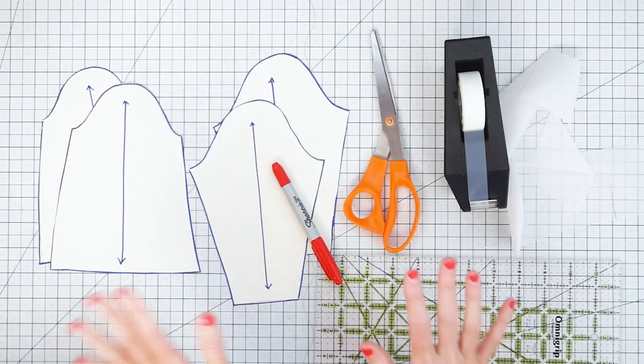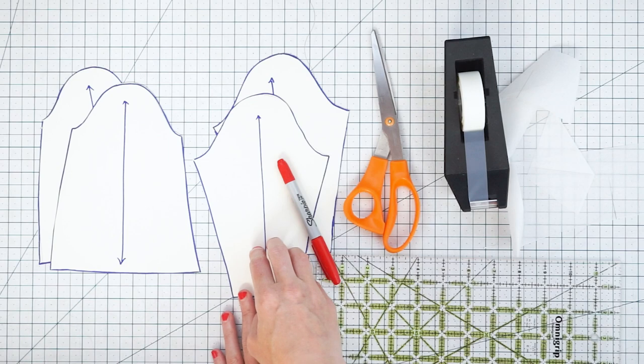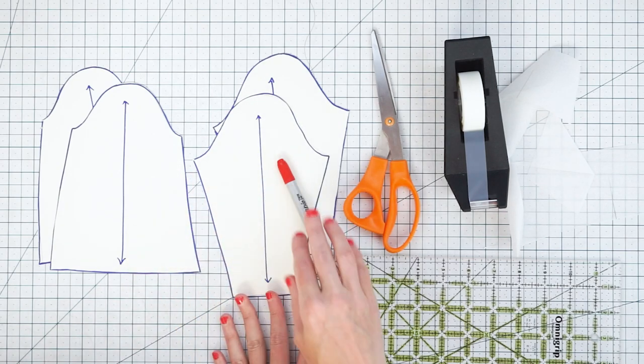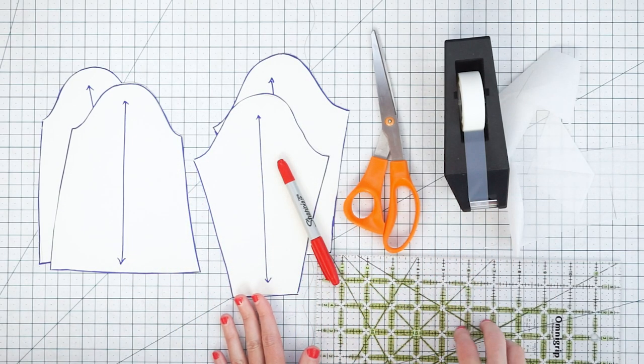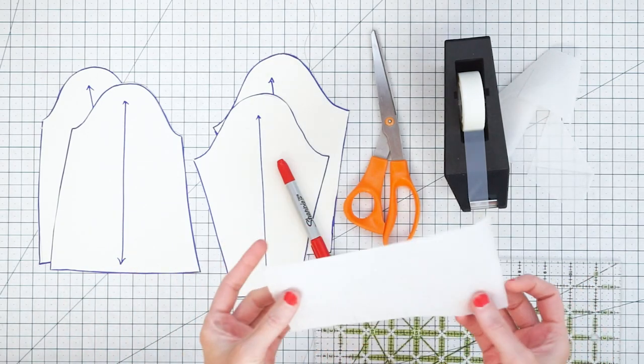Let's get started. The only things you need to lengthen or shorten a sleeve pattern are your pattern, a pen, scissors, a ruler, some tape, and if you're lengthening you'll need some scratch paper.